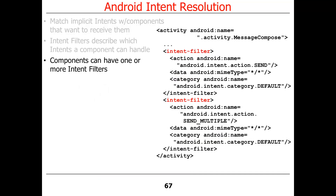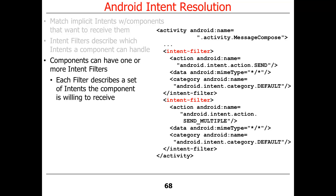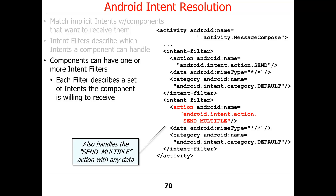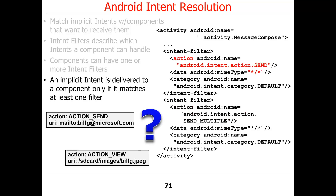Components can have more than one intent filter. Here's an example from the message compose activity: this activity responds both to action send intents and to send multiple intents. Send multiple indicates that multiple people are going to receive the information, as opposed to just one. So it handles the send action with any data and the send multiple action with any data. Looking at the real email app file, you'd see many more filters in there as well.